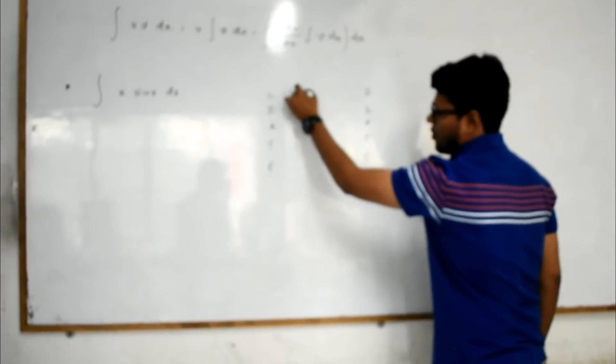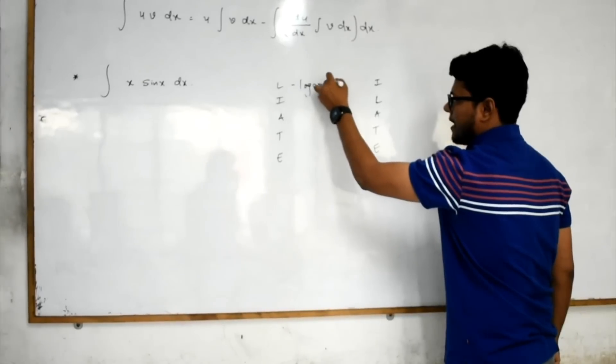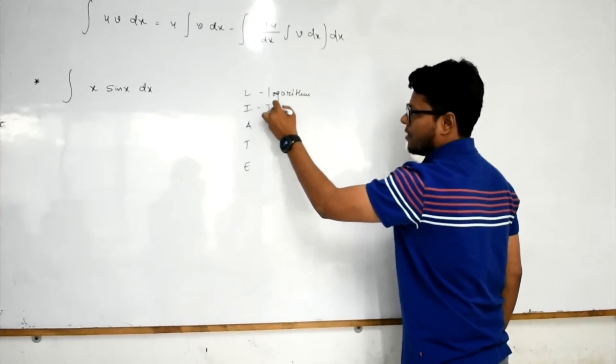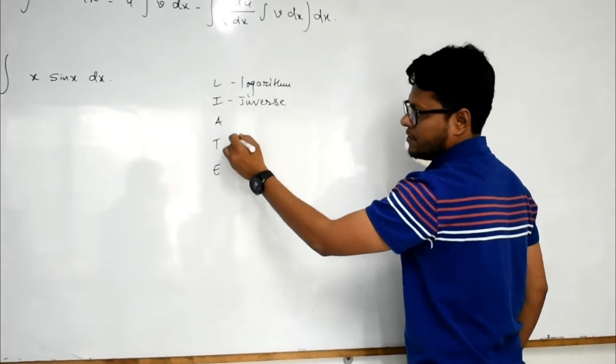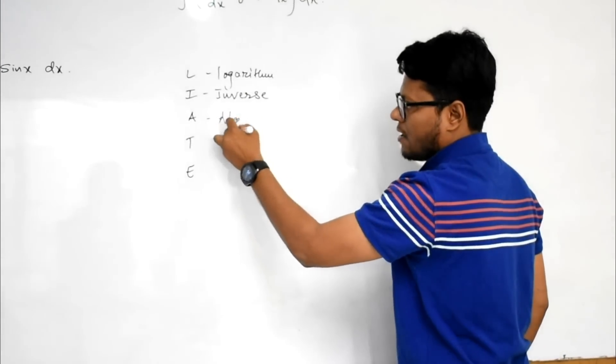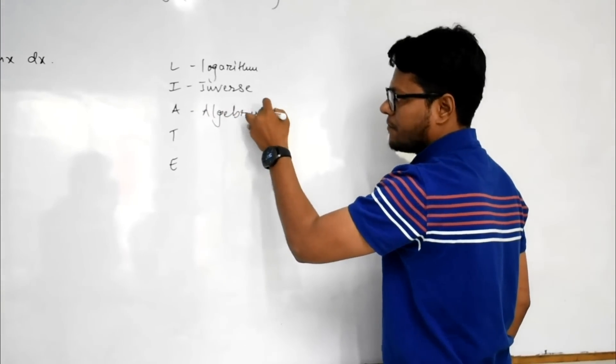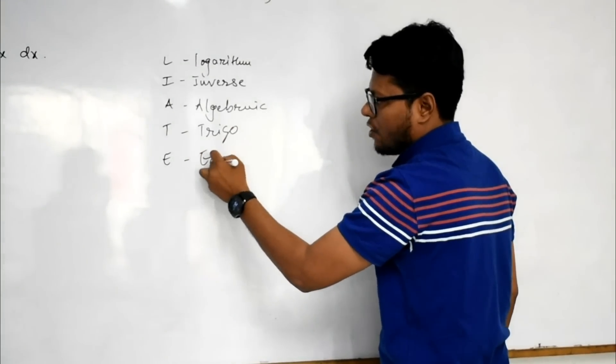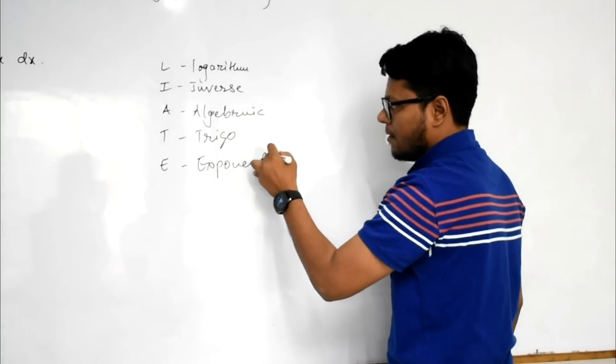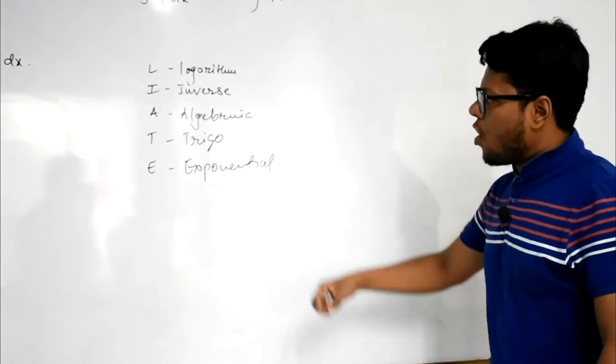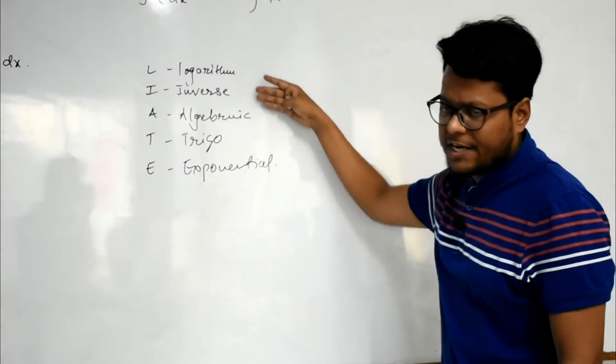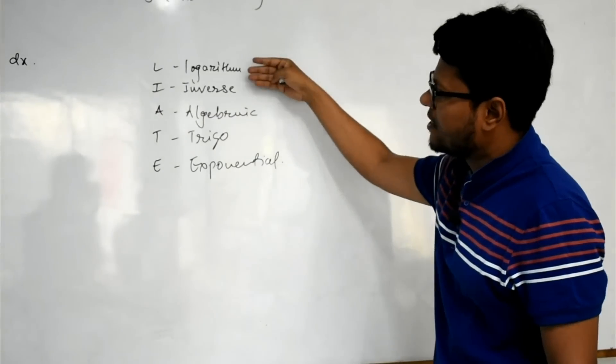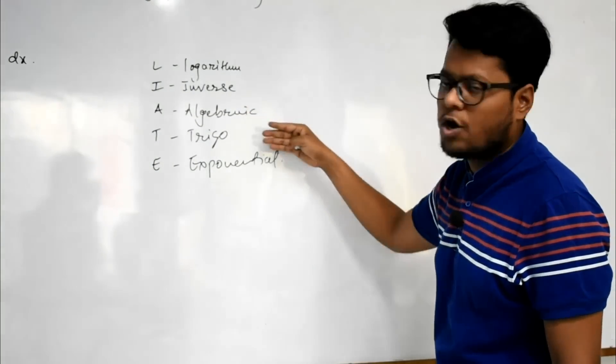Where L stands for logarithmic, means logarithm terms. I stands for inverse terms. A is for algebraic, D for trigonometric, and E is for exponential. So LIATE stands for logarithm, inverse, algebraic, trigonometric, and exponential.